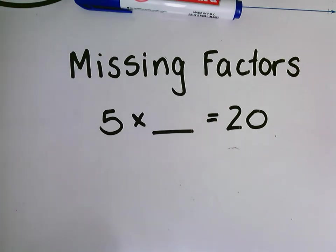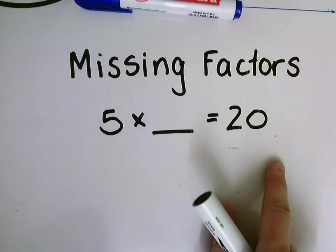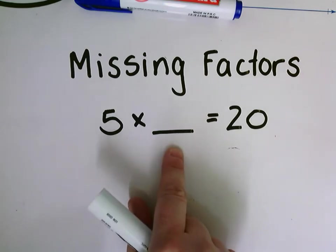In today's lesson we're going to be solving some problems that have missing factors. Here I have an equation: five times blank equals 20. So I'm missing this factor here.